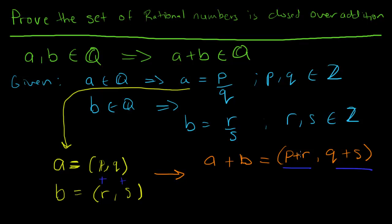P plus R is another integer because those are both integers, and Q plus S is an integer. So both are elements of Z.